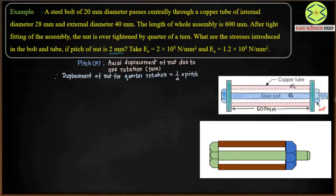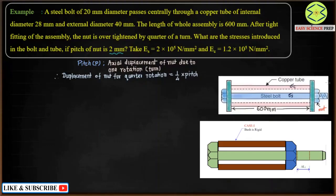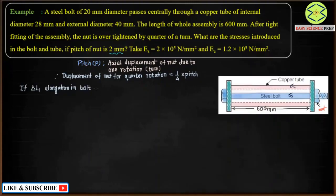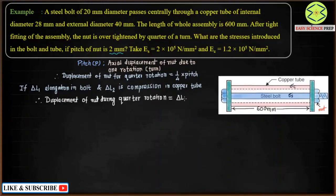I have divided this situation into two separate conditions. In Case 1, I assume the copper tube is rigid — rotating the nut causes elongation delta L1 in the steel bolt. In Case 2, I assume the copper tube is flexible — rotating the nut causes further compression of the copper tube, and the nut moves by distance delta L2. Therefore, the overall displacement of the nut equals delta L1 plus delta L2.